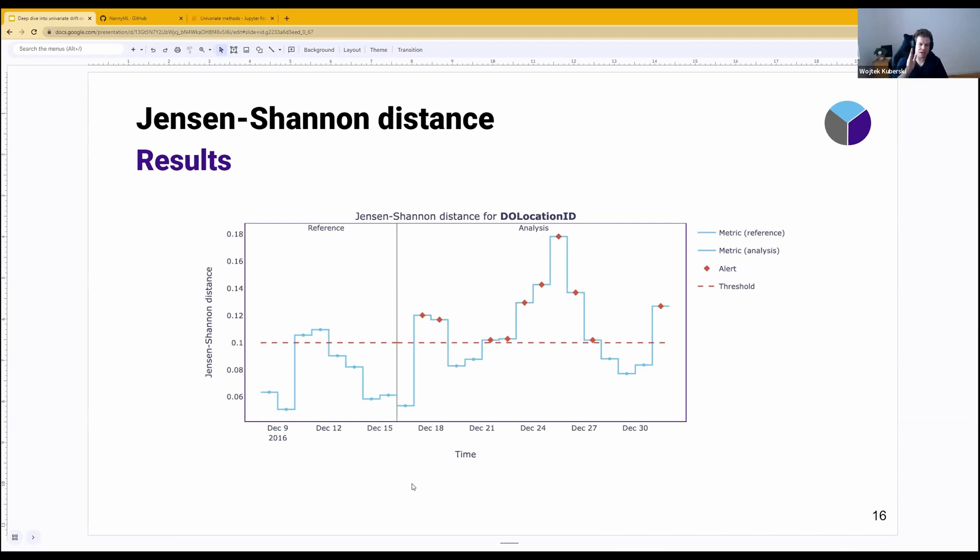And then you see the results per chunk, so per group of observations that compare the entire reference dataset at once to the value of the chunk. That's why you can see that even in reference, the distance can go slightly higher. If it goes above the threshold, and in that case, the default threshold is 0.1, something that we empirically determined to be quite a robust threshold, then you should at least take a look at them.